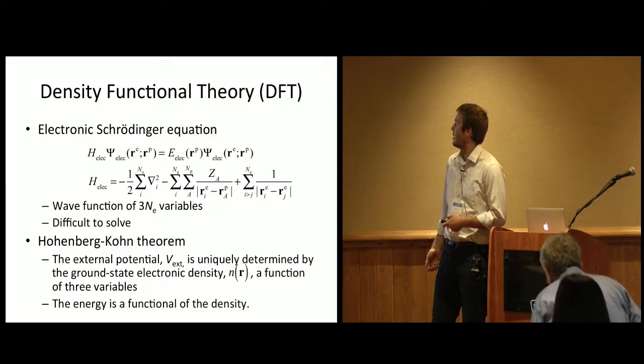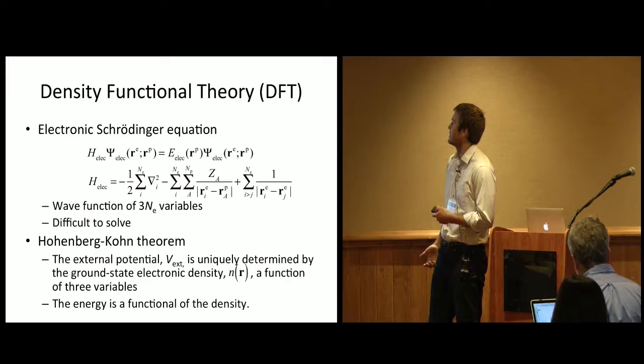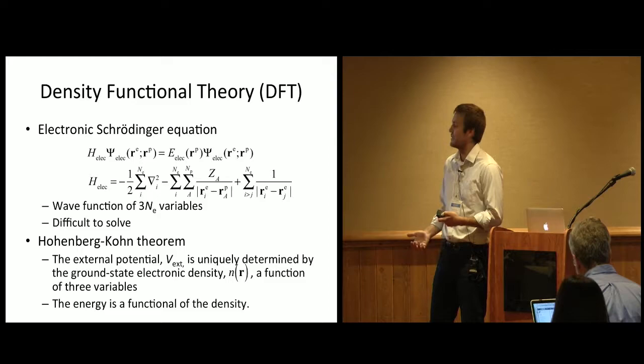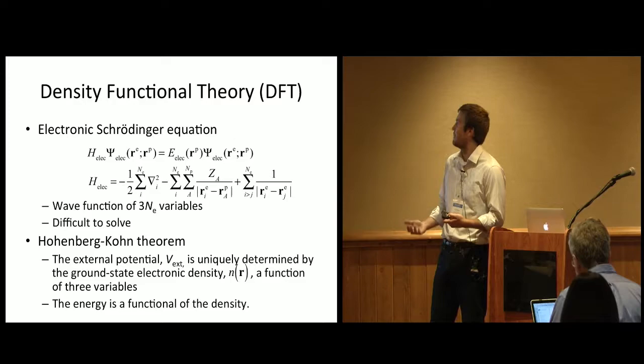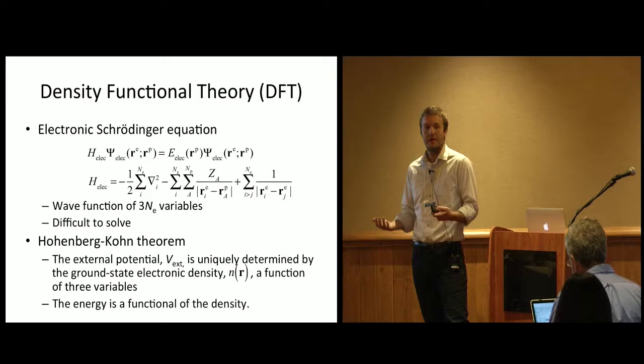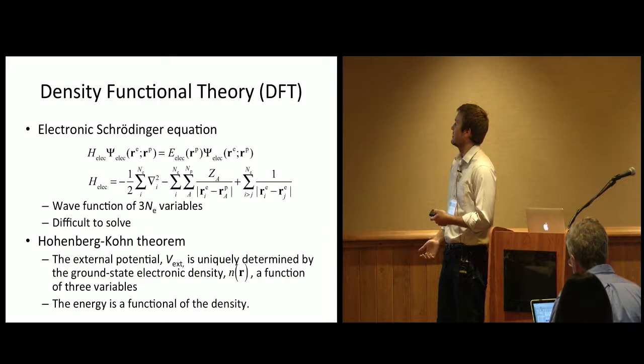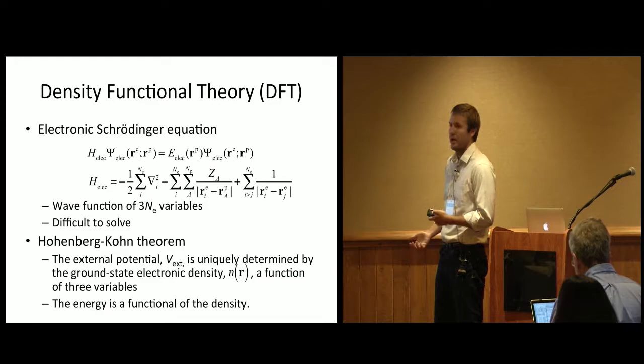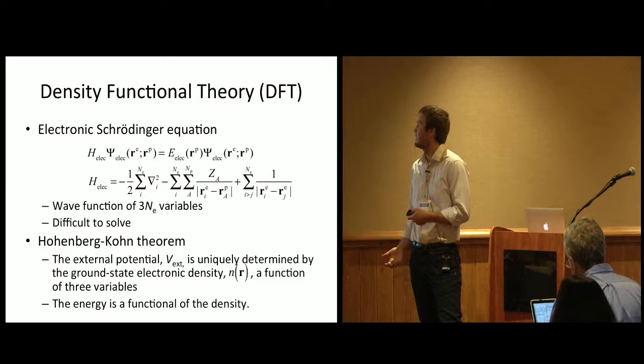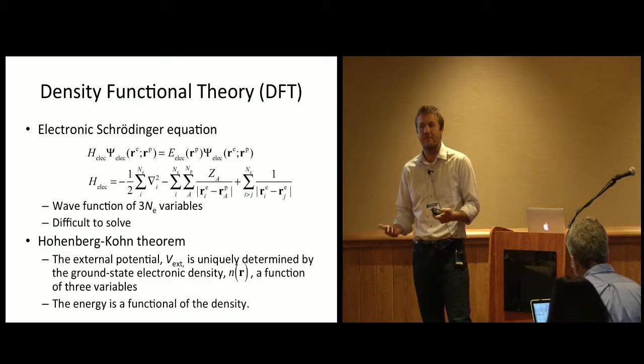Our group does quantum chemistry broadly, and our starting point is solving the electronic Schrödinger equation written here: H psi equals E psi. This assumes a time-independent potential from the normal Schrödinger equation. We also invoke the Born-Oppenheimer approximation, so we have nuclei that we treat classically just as point particles, and the electrons immediately adjust to any perturbation. Our Hamiltonian here for the system includes kinetic energy of electrons, electron-classical nuclei attraction, and electron-electron repulsion.